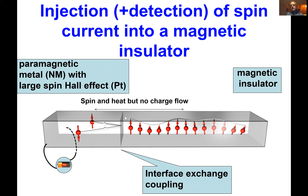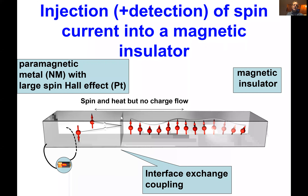In principle you could also bias the system with temperature differences — the spin Seebeck effect — but I won't go into detail on that. Microscopically, what happens is an interface exchange coupling between the electrons in platinum and the magnons in the magnetic insulator. When quantized, this coupling yields spin-flip scattering that creates or absorbs a magnon in the magnetic insulator; the strength of the coupling is determined by the interface exchange matrix elements.